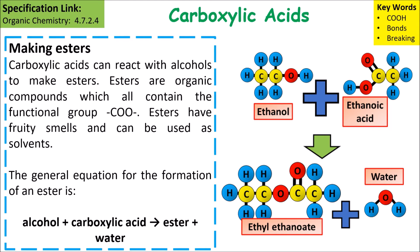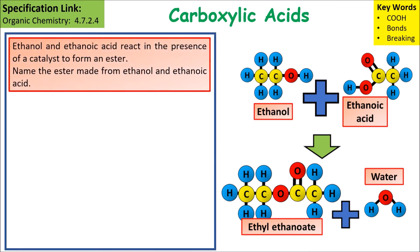You can see in the diagram that a molecule of water has been removed and a bond has formed between the two OH groups of ethanol and ethanoic acid. So ethanol and ethanoic acid react in the presence of a catalyst to form an ester.